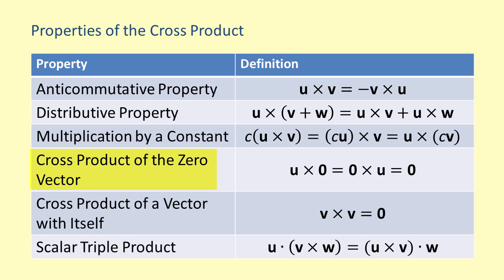The fourth property is the cross product of the zero vector property. This property states that the cross product of any vector with the zero vector is the zero vector. This is true no matter the order used in taking the cross product. Our next property is the cross product of a vector with itself, which will always yield the zero vector.